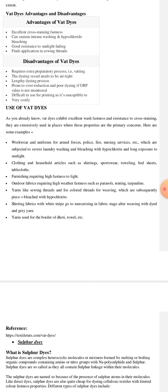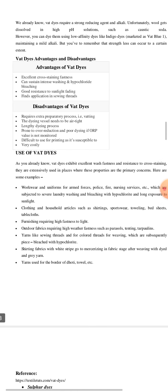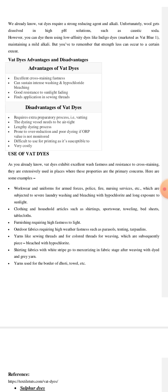Furnishing requires high fastness to light, so we can use vat dyes here also. Outdoor fabrics require high weather fastness, such as parasols, tenting, tarpaulins. Yarns like sewing threads and colored threads for weaving, which are subsequently bleached with hypochlorite. Shirting fabrics with white stripes go to mercerizing in fabric stage after weaving with dyed and gray yarn, and yarns are used for border of dhoti and towel. These all things prove that vat dyes have extensive uses.